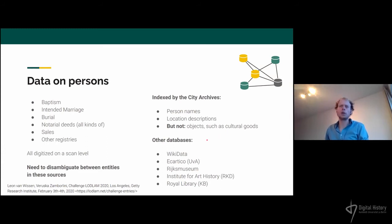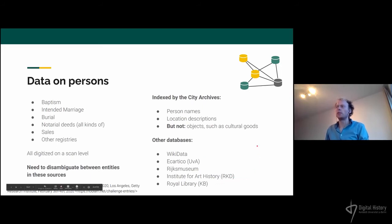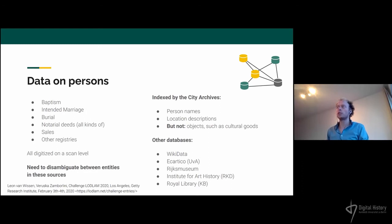We also have other databases available, such as Wikidata or the Thesaurus of the Royal Library. But these mostly contain information on the well-known Amsterdammers, the more famous ones, not the common Amsterdammers. To find information on the commoner, we really have to dig into the archival material.